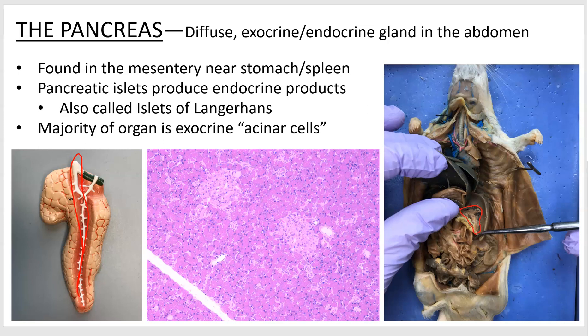Moving on to the endocrine function: there are structures called pancreatic islets, which I'm circling right here. They are noticeably lighter colored than the surrounding acinar cells. These pancreatic islets, or islets of Langerhans — and it's pronounced 'islet,' not 'island' and not 'is-let' — the pancreatic islets produce a couple of different hormones, which I'll detail shortly.